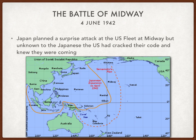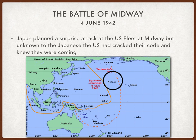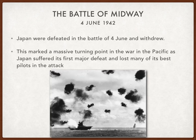One of the big turning points in the war in the Pacific was the Battle of Midway, which took place on the 4th of June 1942. A month earlier there had been a battle at Coral Sea which was pretty much a stalemate. Japan had now decided they were going to try to really knock out America with a surprise attack on the US fleet at the island of Midway, off the coasts of Hawaii. However, what the Japanese didn't know was that the US had cracked the Japanese code and knew the surprise attack was coming. At the Battle of Midway, Japan were defeated and withdrew, marking a massive turning point in the war — it was the first big defeat Japan suffered and they lost many of their best pilots.